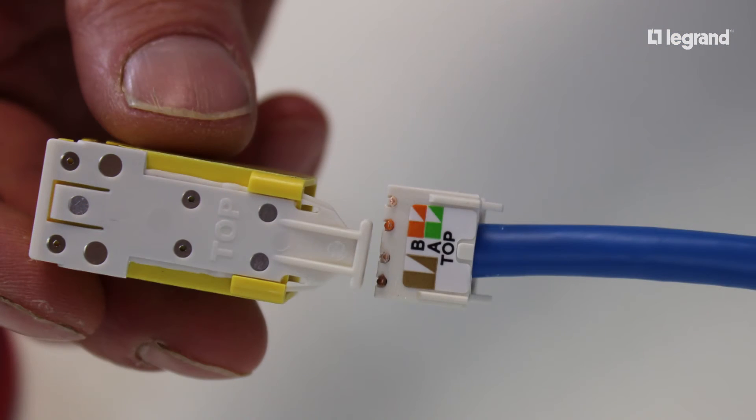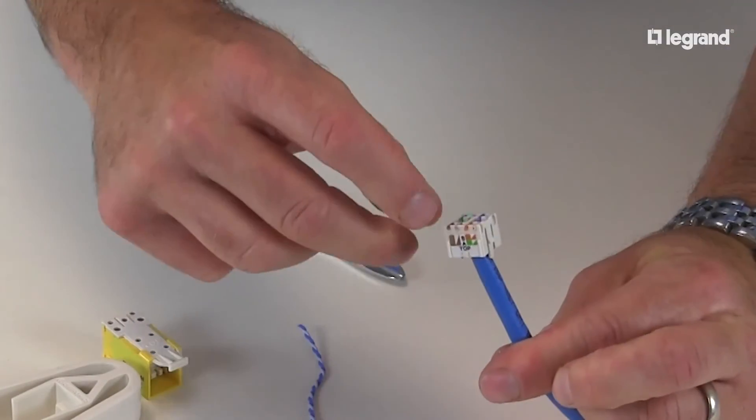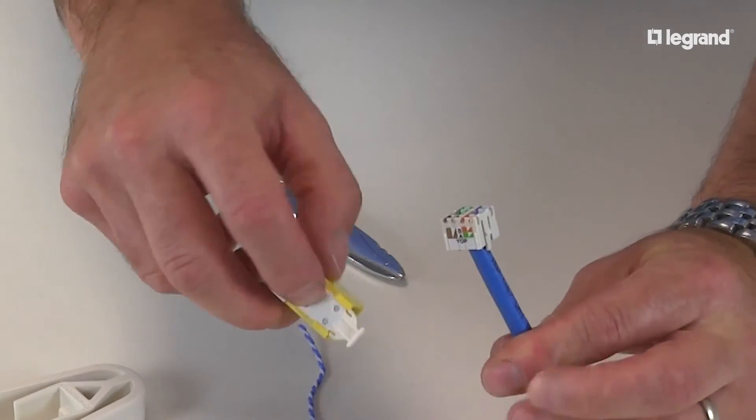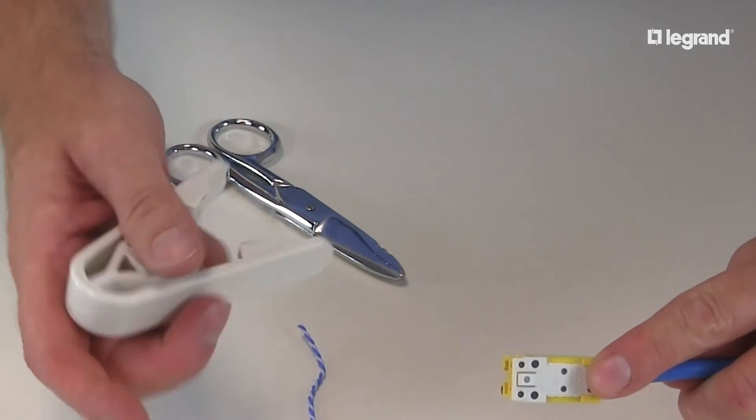Now you're ready to start the termination. We're going to set the lacing cap into the back of the jack. The label here indicates the top of the lacing cap. Align the lacing cap to the top of the jack body and seat both parts together. Make sure the tabs align with the grooves in the housing.